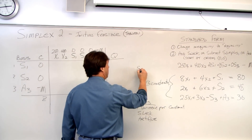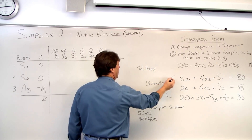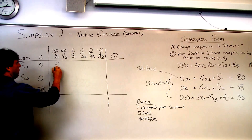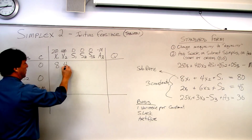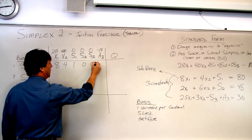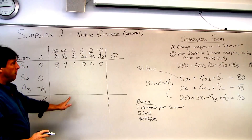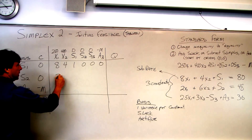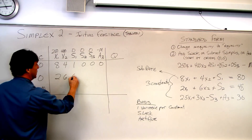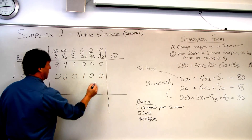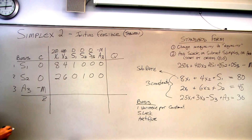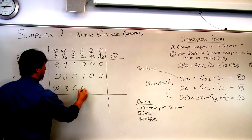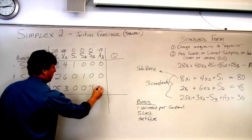This is called our sub-rows. To fill in the sub-rows, we bring in our constraint functions. For s1, we have 8x1 and 4x2, giving the row: 8, 4, 1, 0, 0, 0 — this is a unit vector. For the second sub-row: 2, 6, 0, 1, 0, 0. For the third constraint row: 2.5, 3, 0, 0, negative 1, and 1.